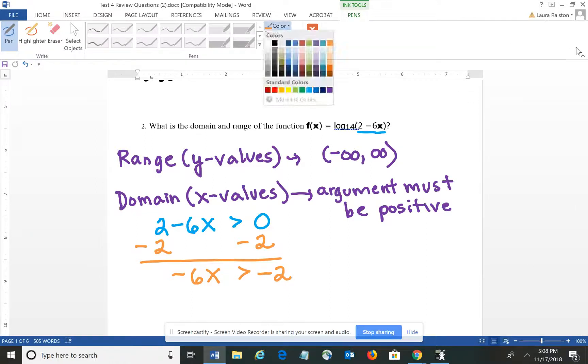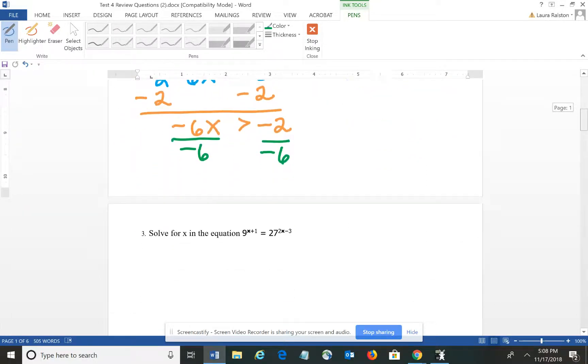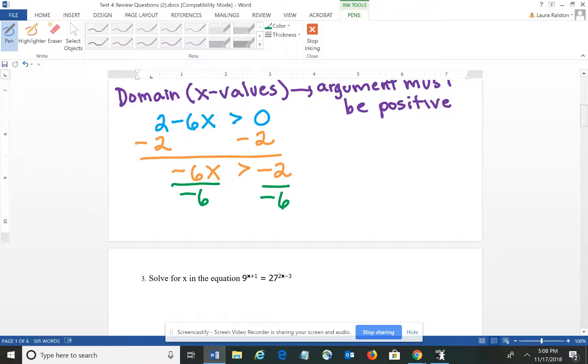Then I'm going to divide both sides by negative 6. Now be careful because remember when you are dividing by a negative and dealing with an inequality, you have to flip or invert the symbol. So it's really X is less than 1 third. So our domain written as an inequality is X is less than 1 third.